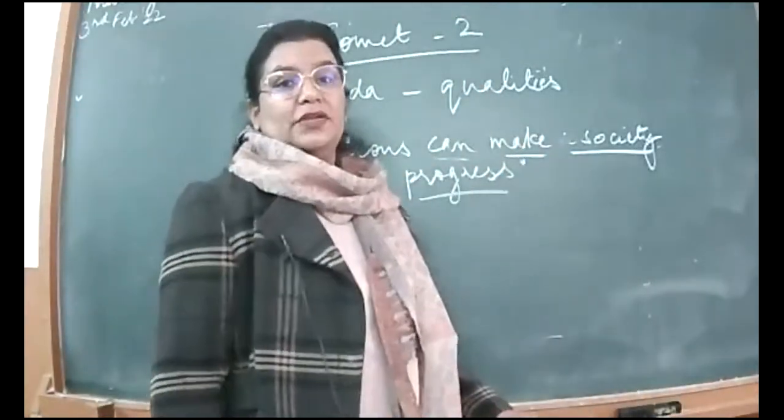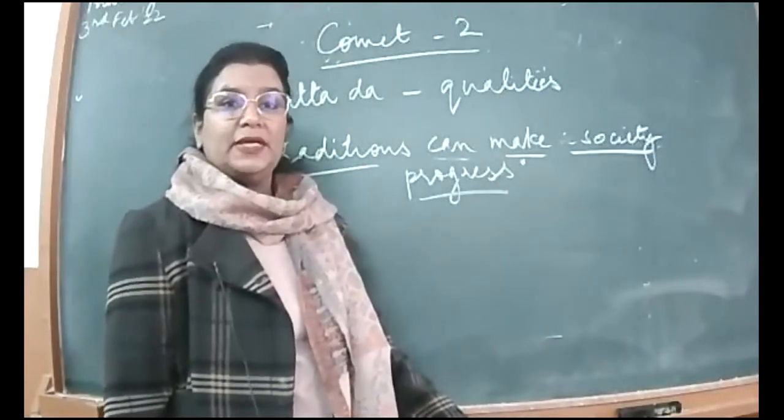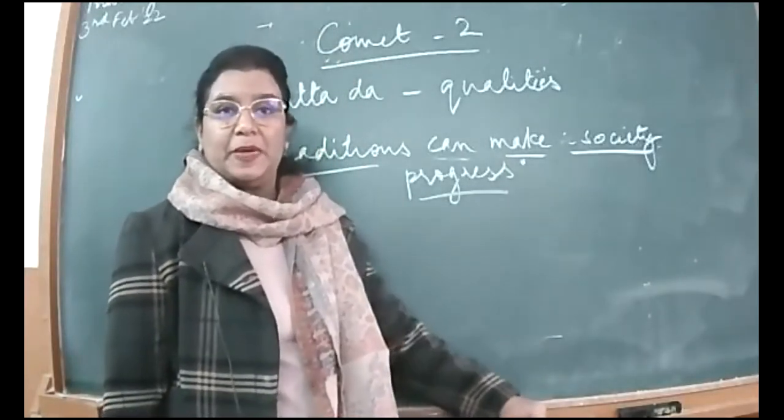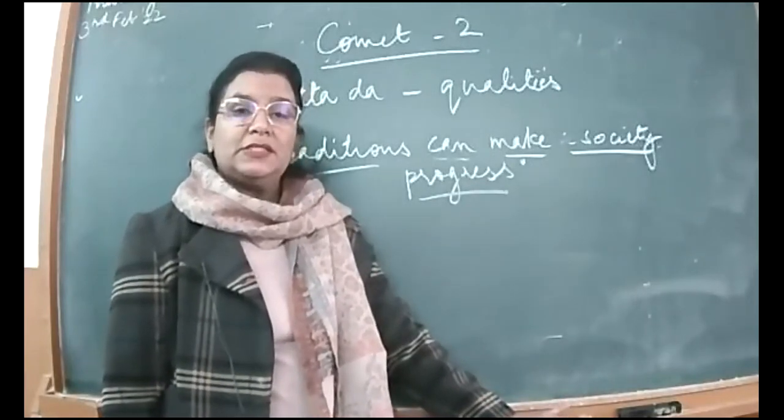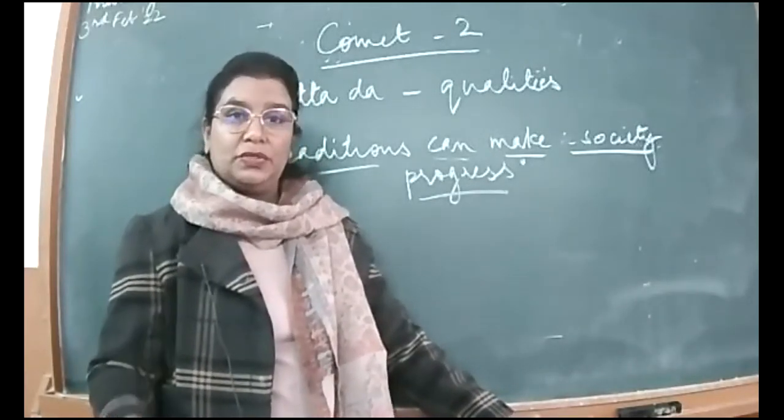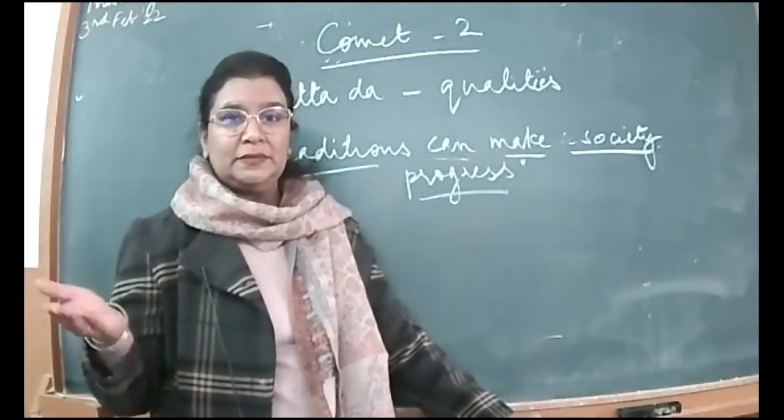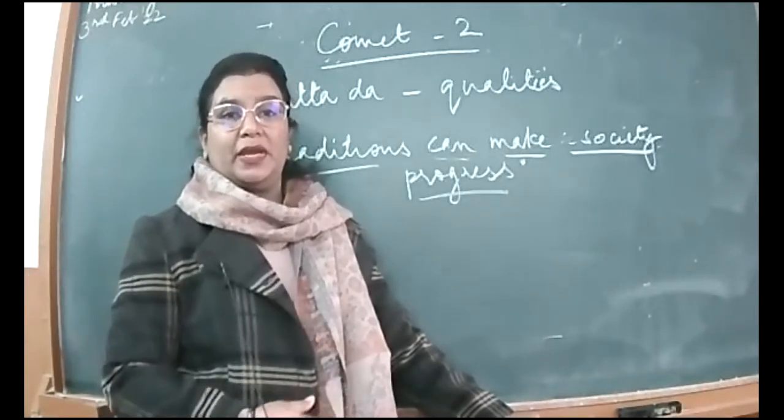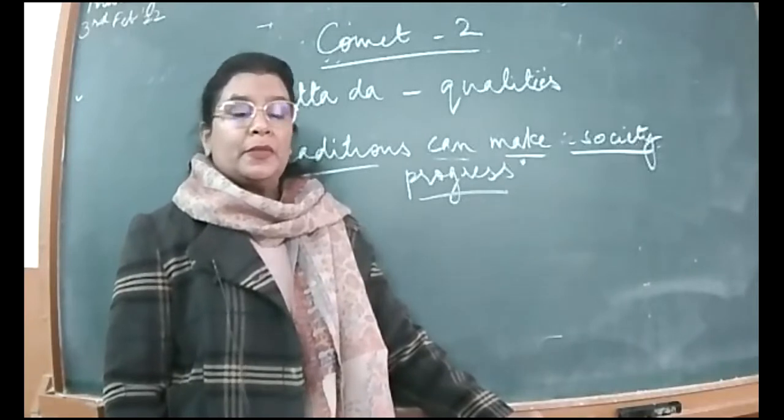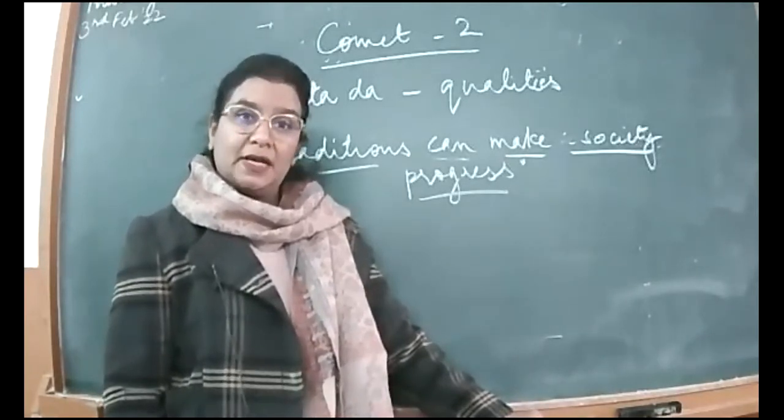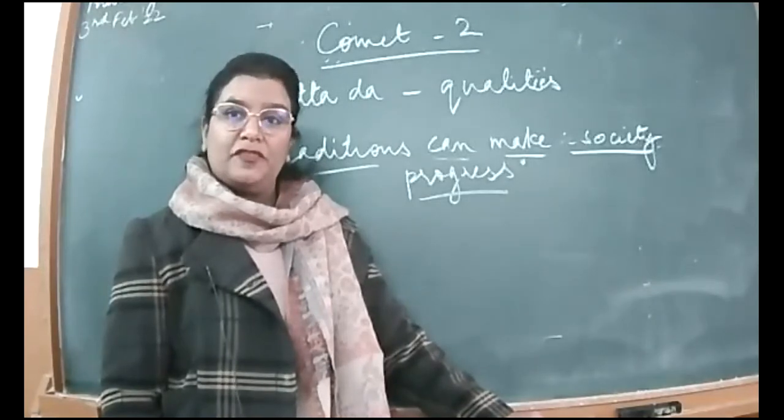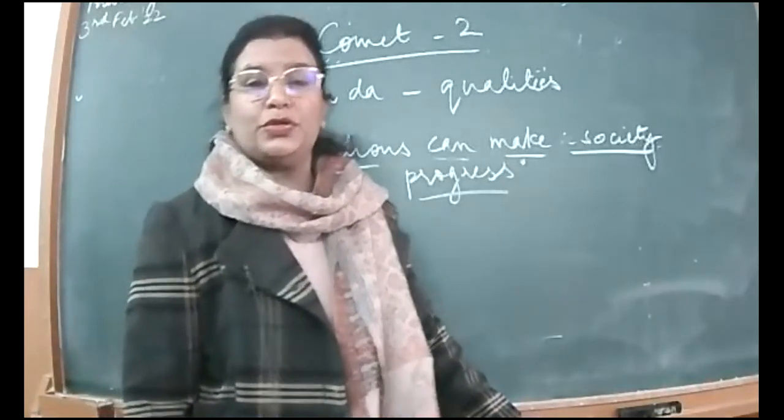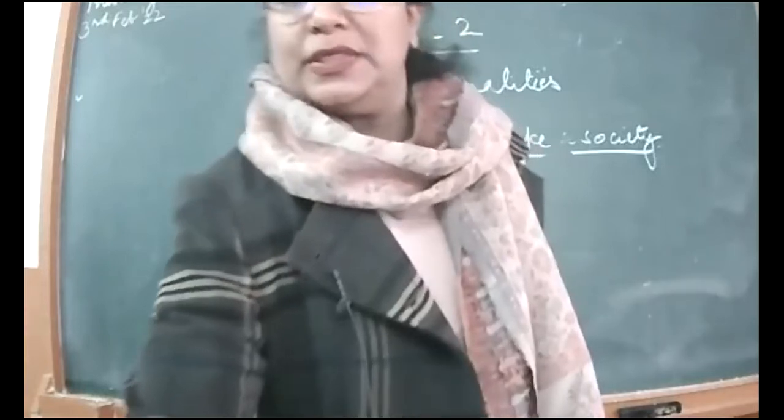Now students, we have finished with the reading of the chapter, the comet second part. And what did we read in this chapter? How the scientists, although they had a plan that was the Project Light Brigade ready, and it had started also so as to deviate the comet from its path, so it would not come and collide with the Earth.